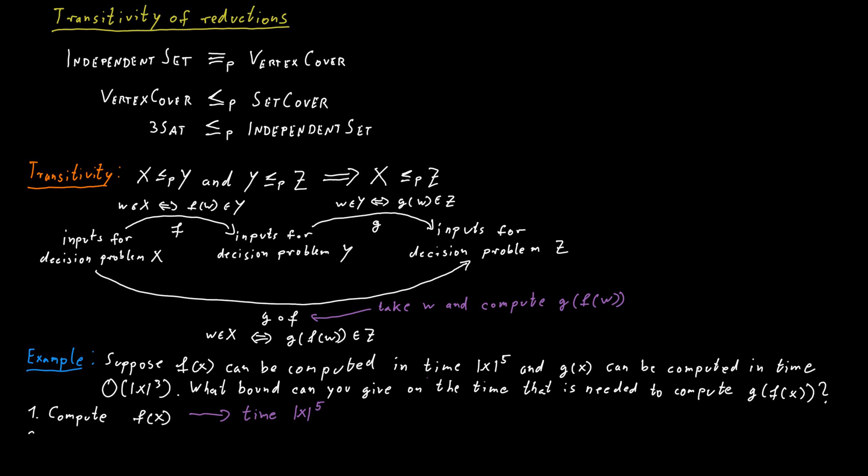And in the second step, we compute the function g of Y, where Y is the result of the first computation. So Y is equal to f of X. This takes time order of size of Y to the power three. But to combine these two things, we would need to think about how big is Y. Right? How large can Y be? In particular in relation to X.